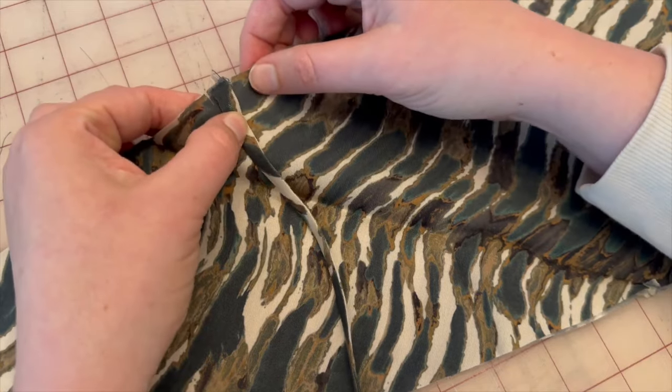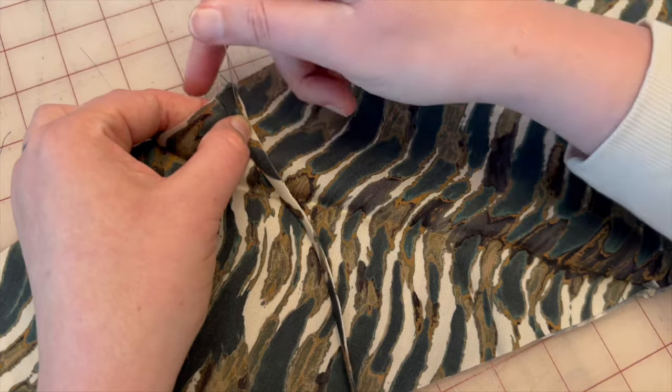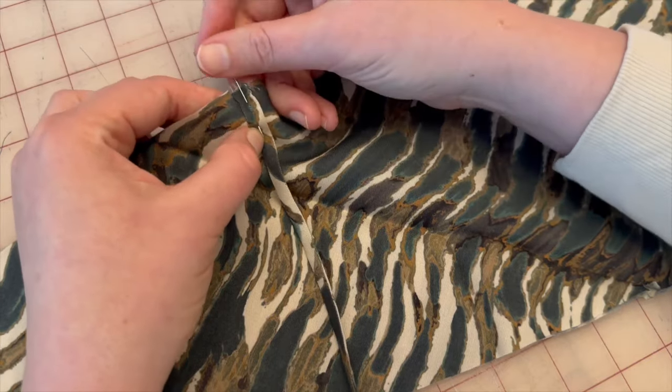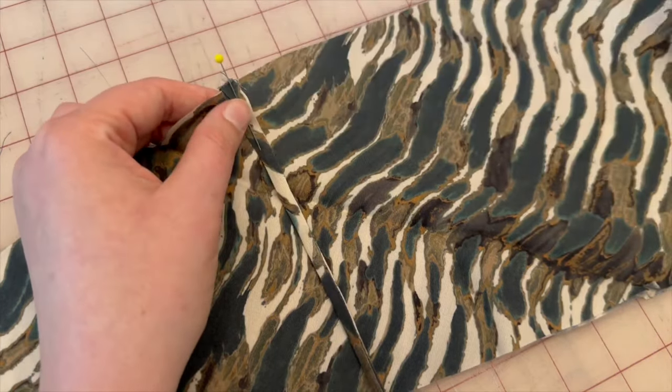We are going to place our straps right there and we are going to stay stitch it down. So do this for both sides of your main fabric pattern piece one.